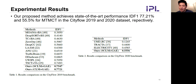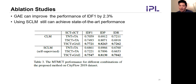Here are our experimental results. Our proposed method achieves state-of-the-art performance with IDF1 above 77% and 55% on the CityFlow 2019 and 2020 datasets respectively. In the ablation study, the graph autoencoder improves IDF1 by 2.3% compared to using a labeled camera link model alone. Although using the self-supervised camera link model yields slightly lower IDF1 than the labeled camera link model, it still achieves over 75% accuracy.